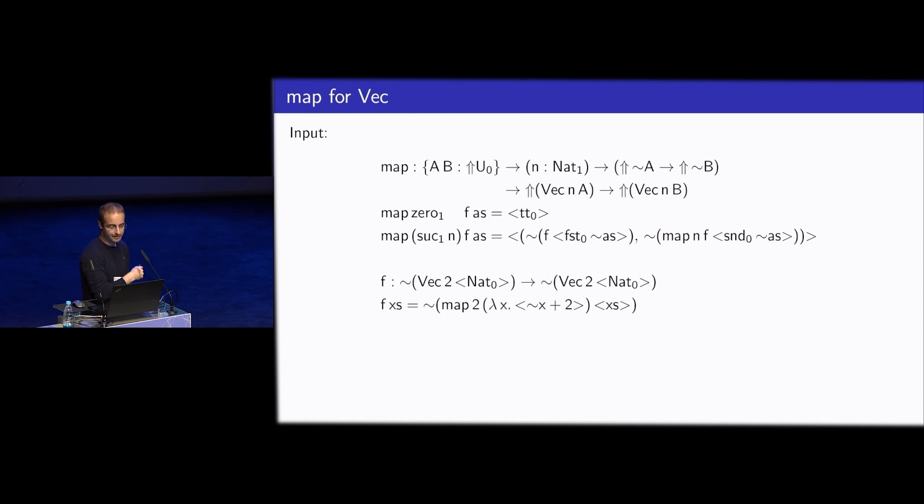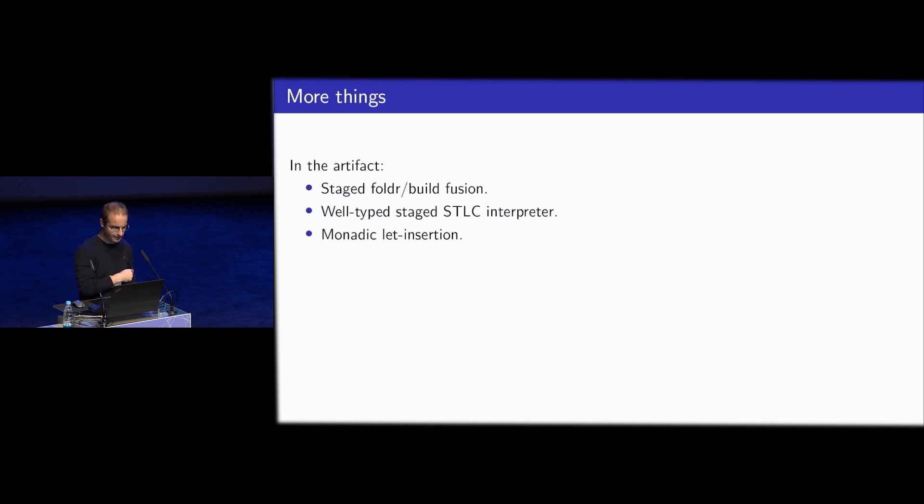And in this case, in order to define this mapping function, I have to use a dependent elimination on natural numbers. So I think dependent types in staged compilation are quite compelling because one of the use cases, one of the important use cases of staging is generic programming. And although in normal programming, we can get by without dependent types in generic programming, it's quite common that we really need dependent types to make a generic program well-typed.